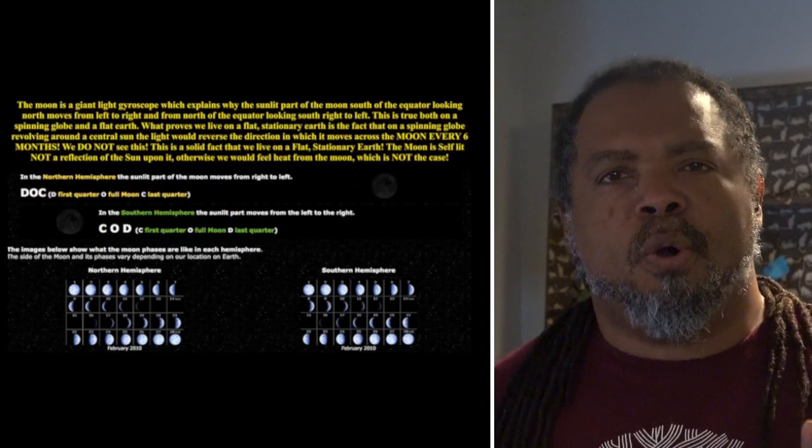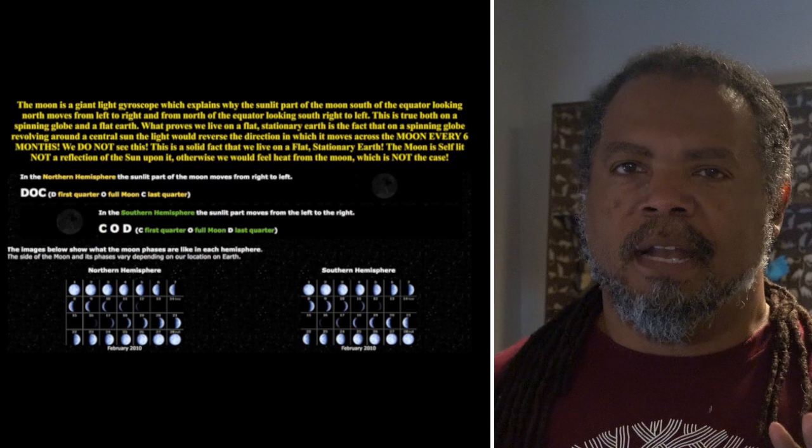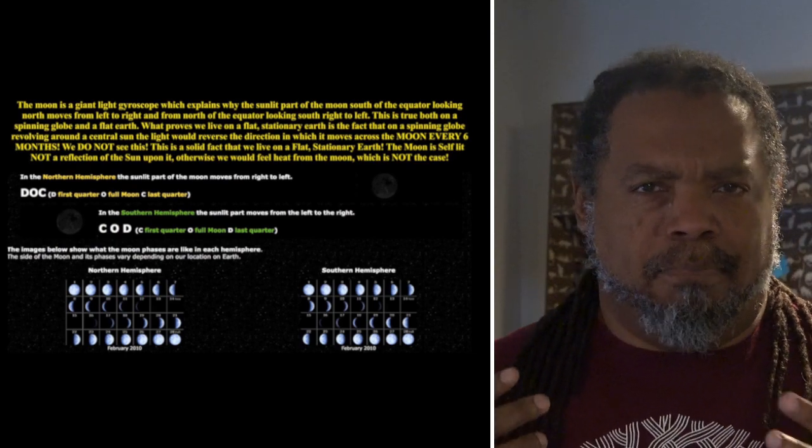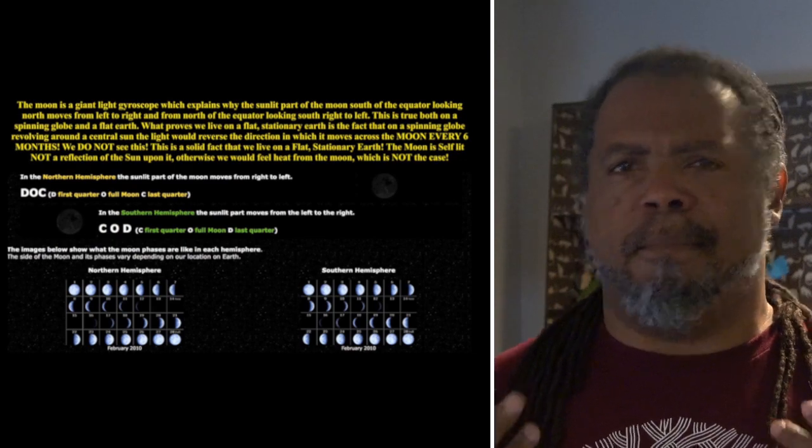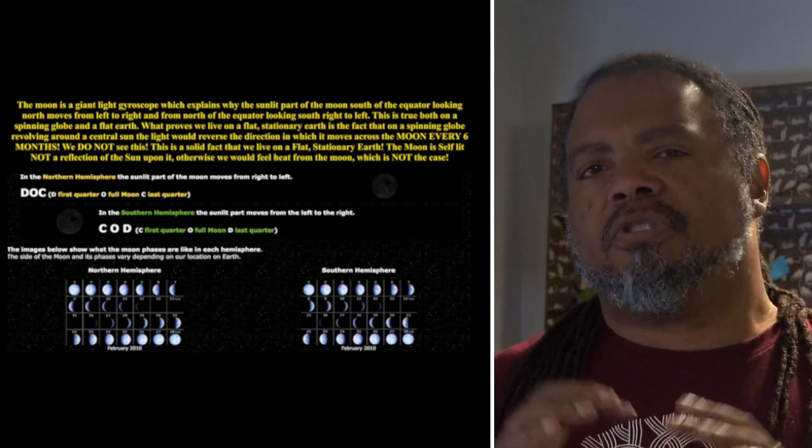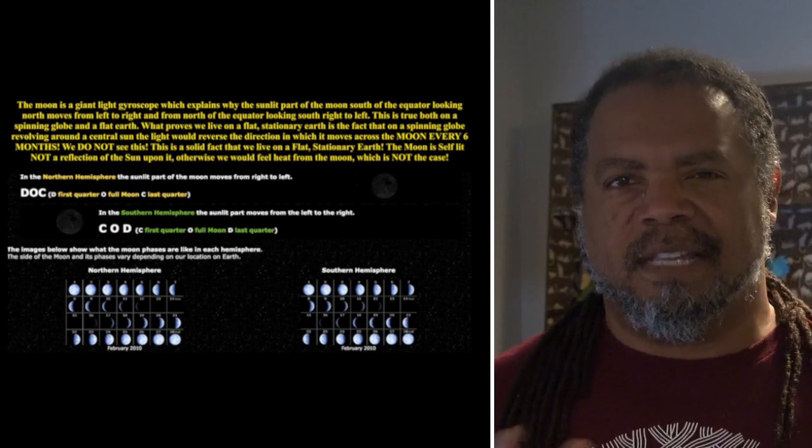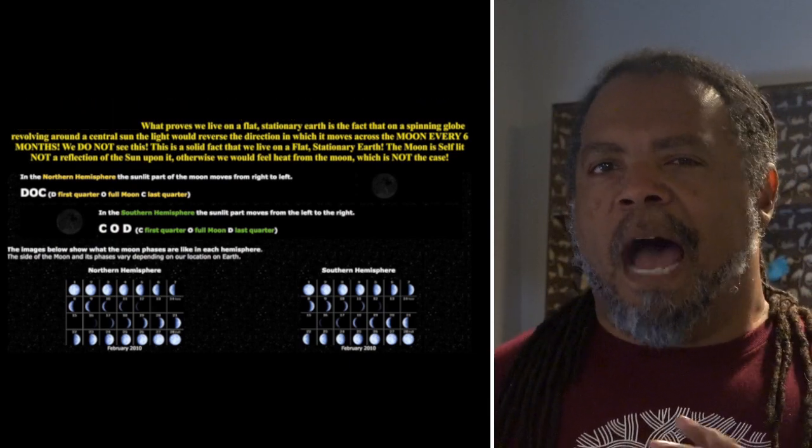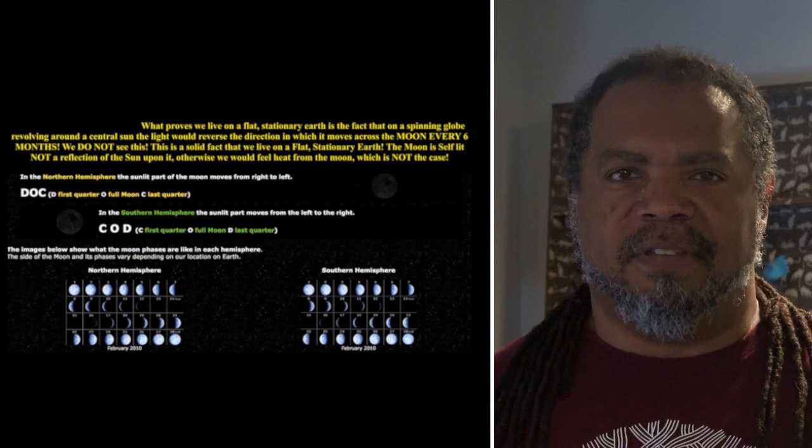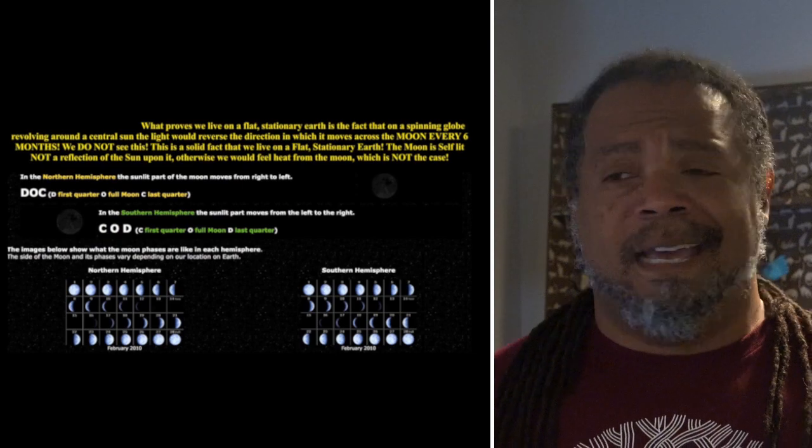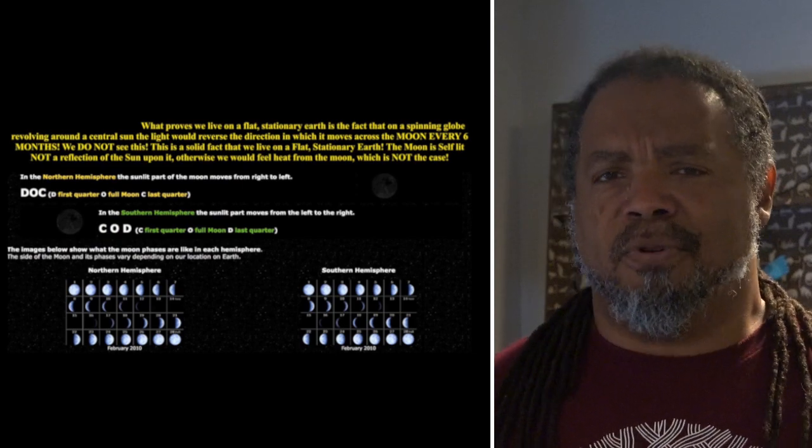Now I'm going to ignore these first few sentences because I don't know what they mean by giant light gyroscope. Also, there's no disagreement about the lunar view from the northern and southern hemispheres, so let's get rid of that part. I'm also going to ignore this last sentence because it's not actually related to the evidence they put forth, and it doesn't hold up to the mildest scrutiny.